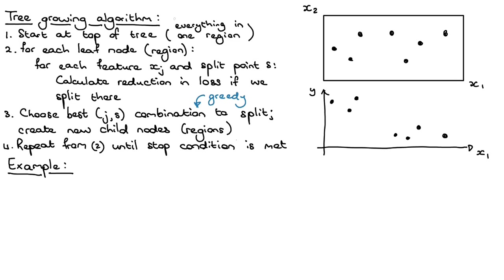It's called a top-down algorithm because we start with all the data in one node together. It's called a recursive algorithm because we keep on repeating this process until some stop condition is met. That probably didn't make that much sense, so let's consider an example.